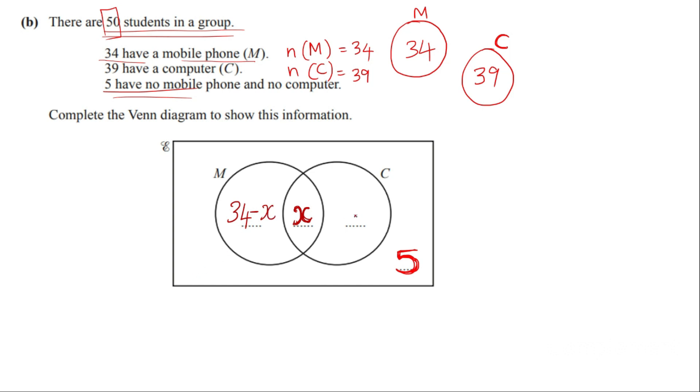Similarly, if you have a total students having computer 39, x falling as an intersection or common students between both. So here it should be 39 minus x.